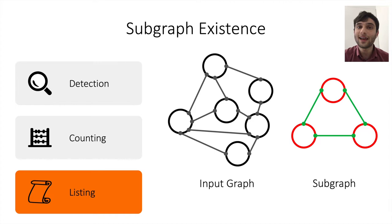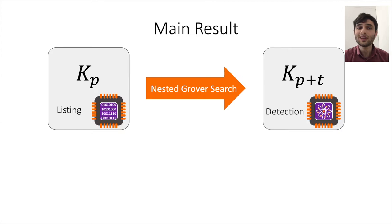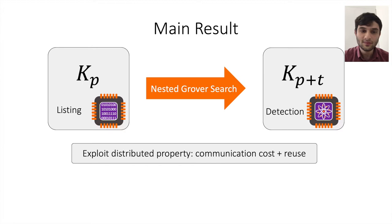Our main result in this paper is taking any algorithm for listing cliques of a given size P in the non-quantum but distributed setting, and using nested Grover search in order to turn it into an algorithm that detects cliques of larger sizes in the quantum distributed setting. A key distributed property is that we pay only for communication costs, and this allows us to reuse data between Grover searches, which makes the nested Grover searches very efficient.